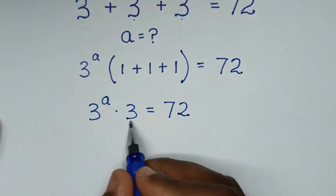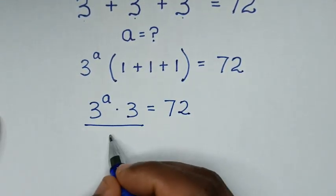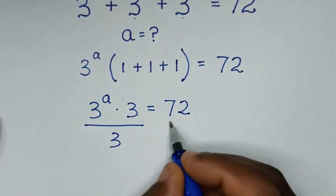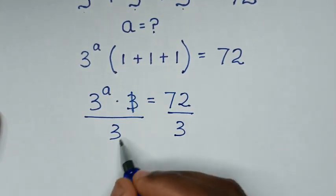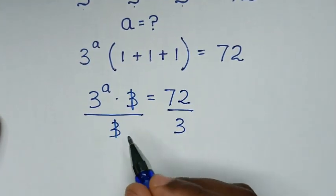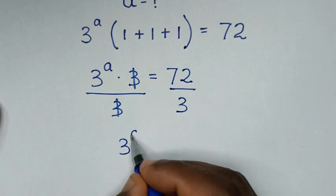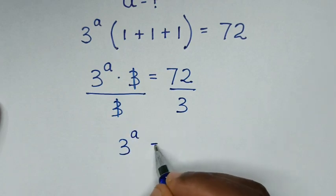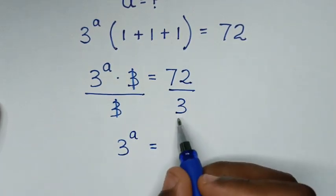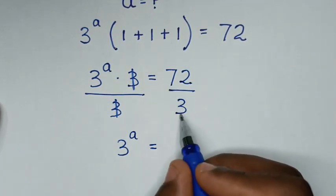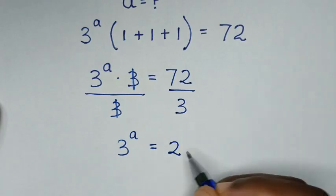Then we'll divide by 3 on both sides, so it will be over 3 on each side. This and this will cancel, then it will be 3^a is equal to 72 divided by 3. Here 72 divided by 3: 7 divided by 3 gives 2 remainder 1.